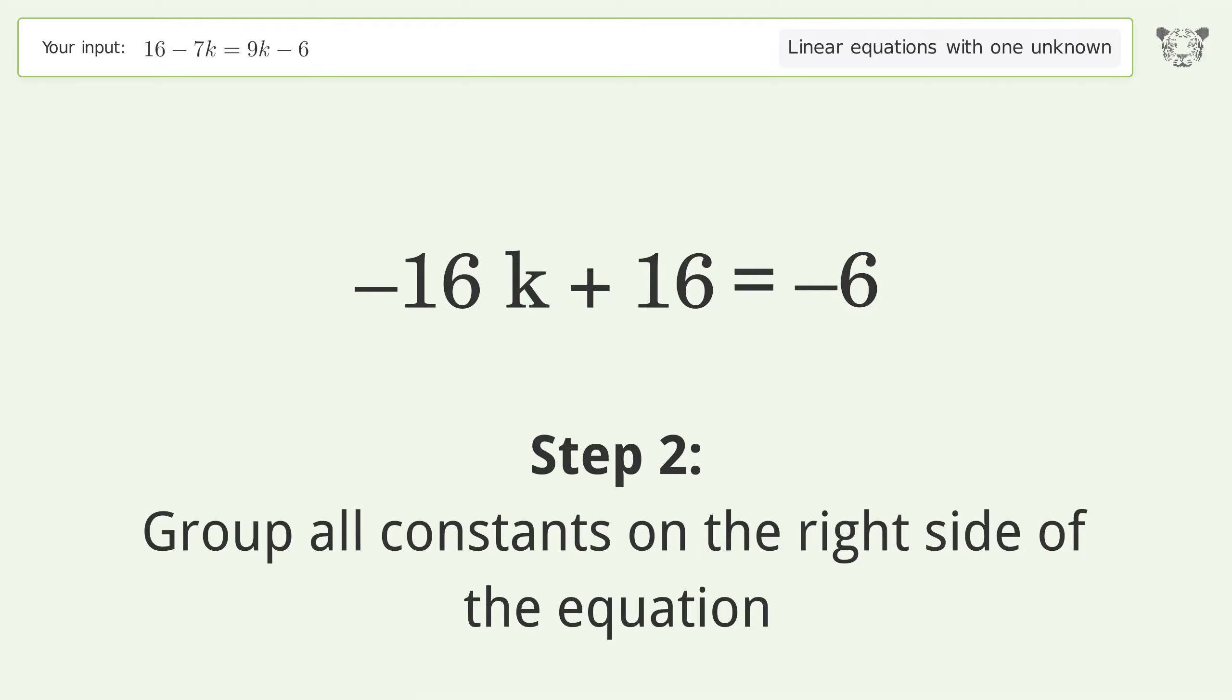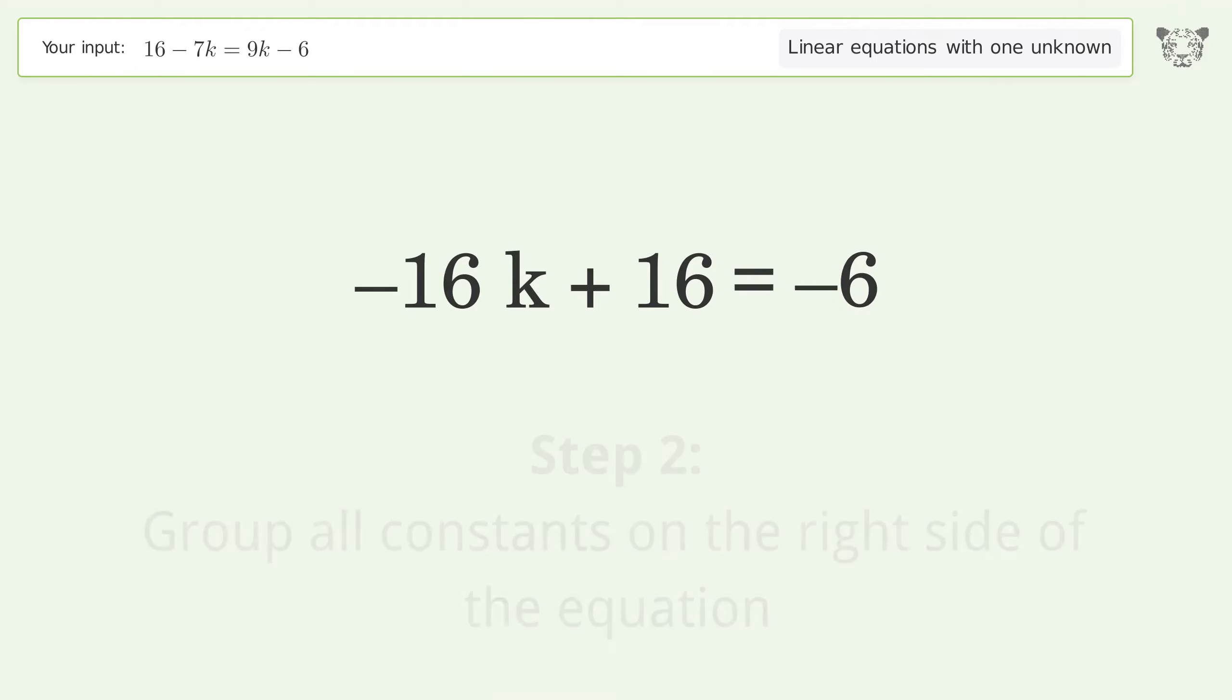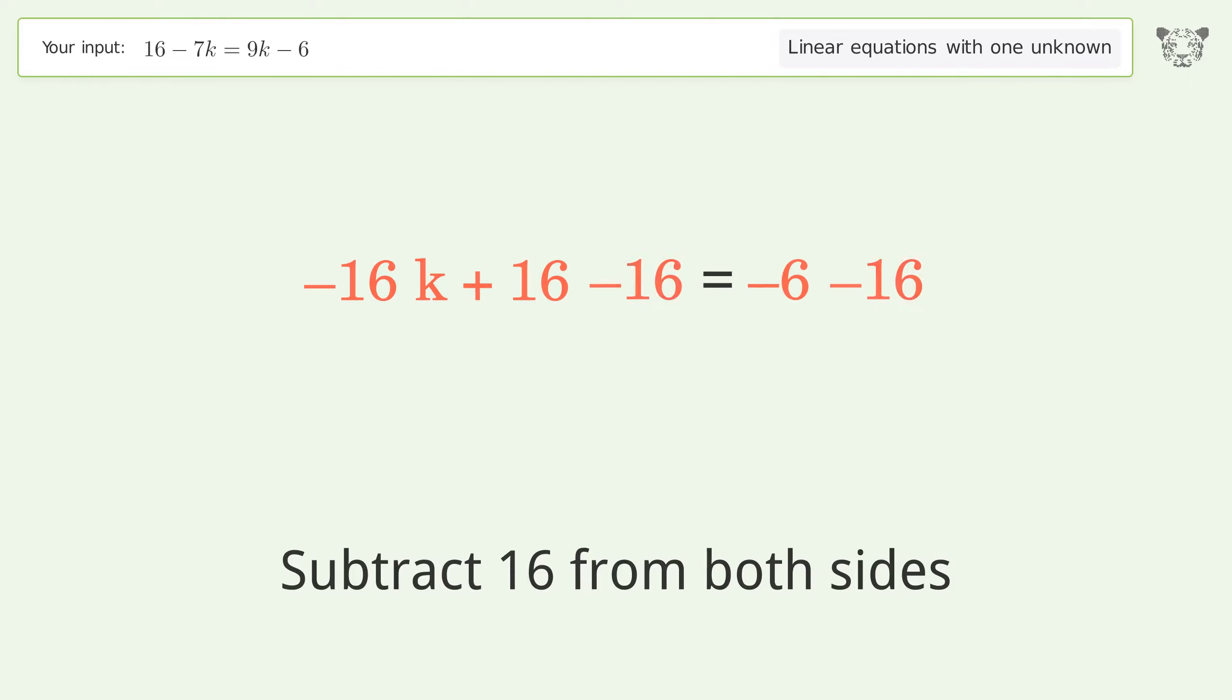Group all constants on the right side of the equation. Subtract 16 from both sides. Simplify the arithmetic.